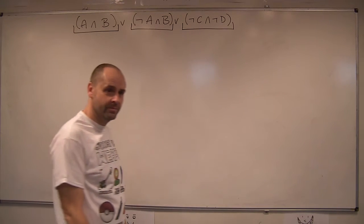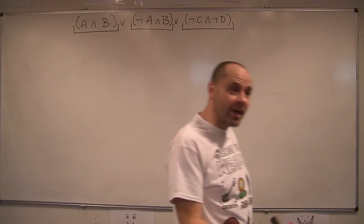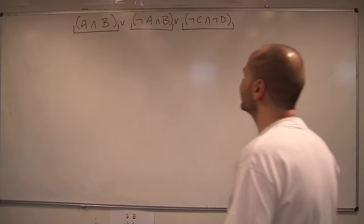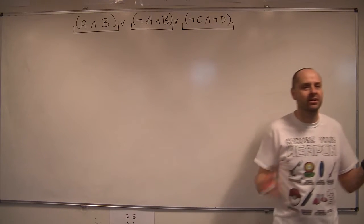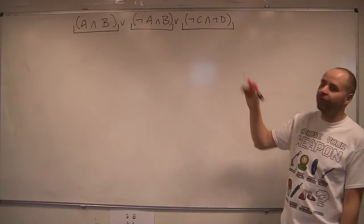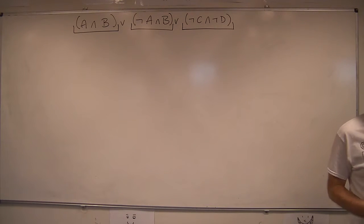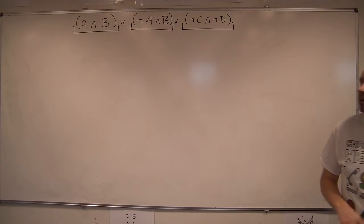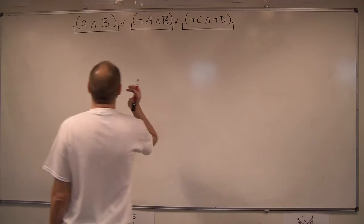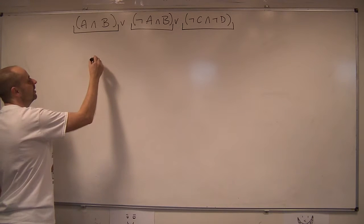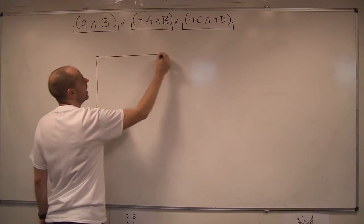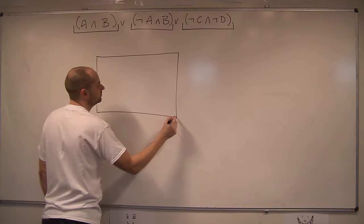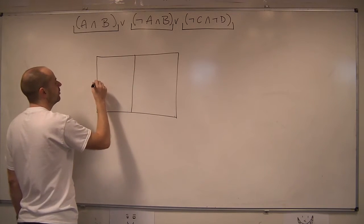That's step one. Step two is to create the actual empty grid. We've got four terms here — this is the most complex you'll get, you might get fewer terms — but this is a four-term one, so we're going to have a four-by-four grid. Let's just draw a four-by-four grid.